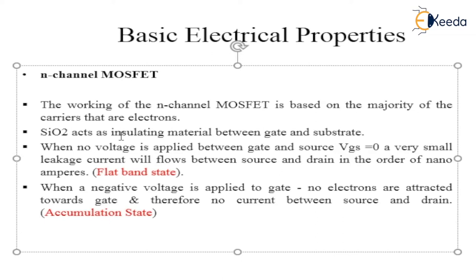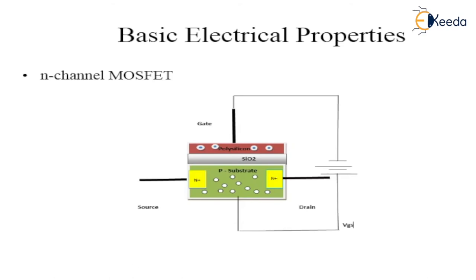SiO2 acts as an insulating material between the gate and the substrate. The SiO2 is placed between the polysilicon and the P-substrate. Polysilicon and the P-substrate are both conducting materials, and the SiO2 is a dielectric material placed between them, so it offers some capacitance.